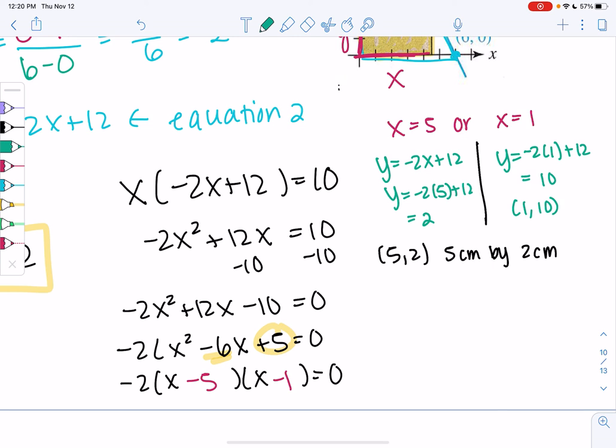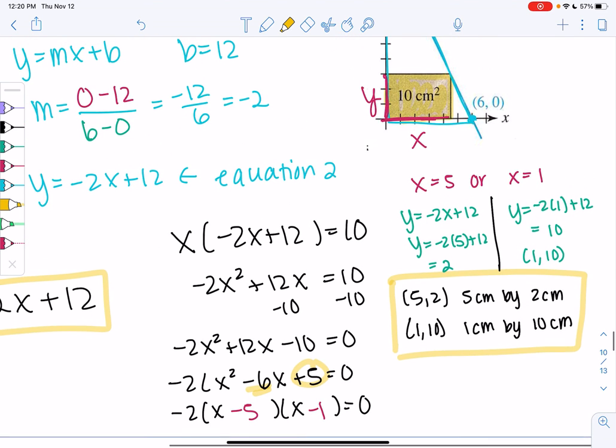Yeah, so 1, 10 would be our other solution. So 1 centimeter by 10 centimeters. Both of those seem to make sense in terms of positive numbers. Let's just check that they make sense on the graph.